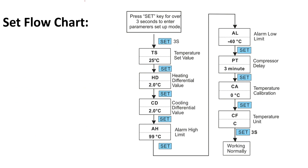To set the temperatures and different menu codes, the user has to press the SET key for three seconds to enter setup mode. The first parameter is the temperature set value, which is set using the increase and decrease buttons. After that, press the SET key to move to the heating differential value, which then needs to be set.